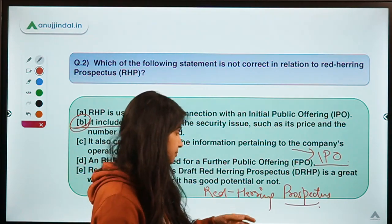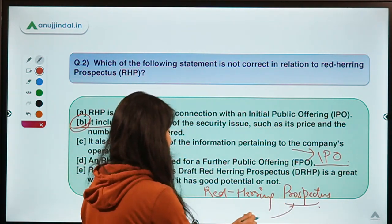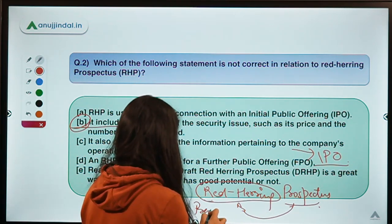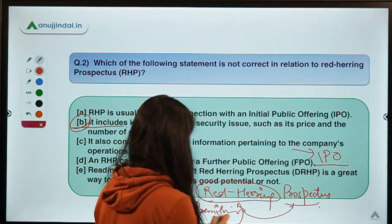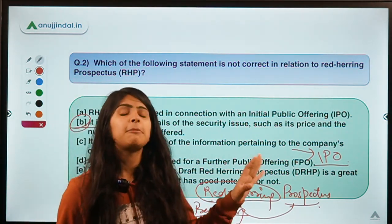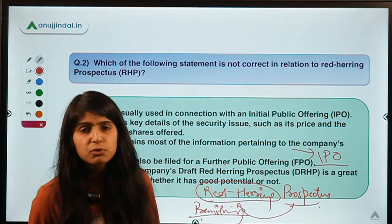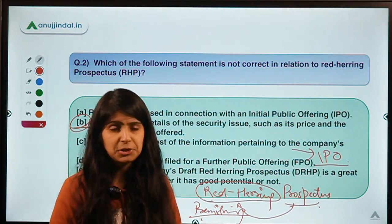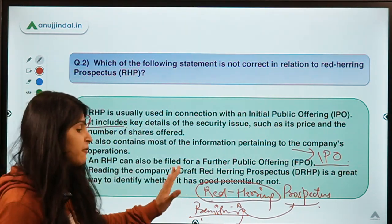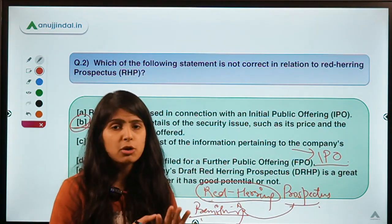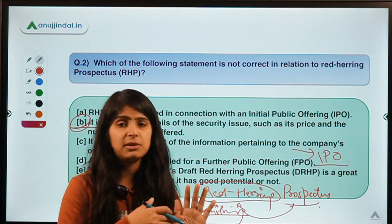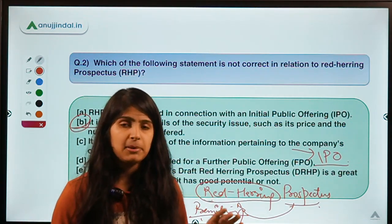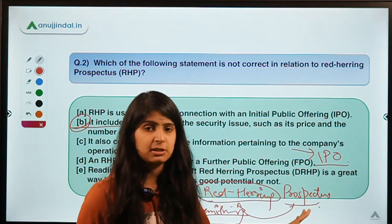A Red Herring Prospectus (RHP) is a preliminary or temporary prospectus that has to be approved by authorities. Once approved, it becomes the final prospectus in which details are provided to the public. It shows regulators the details of the upcoming IPO, and if anything is found wrong, changes are made before it is issued to the public.